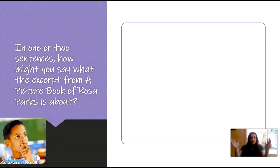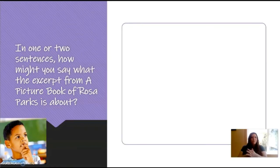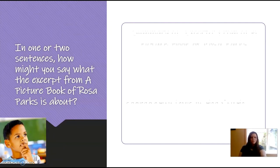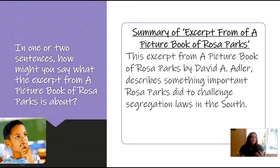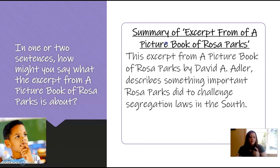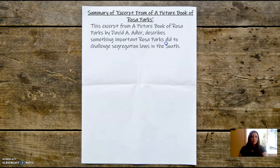So thinking about the excerpt of Rosa Parks — what was it mostly about? Take a moment to think about it. In my opinion, it was mostly about something important Rosa Parks did to challenge segregation laws in the South. I'm going to write that on our sheet: 'Summary of Excerpt from a Picture Book of Rosa Parks' by David A. Adler, and what it's mostly about. So the opening sentence is: 'This excerpt from a Picture Book of Rosa Parks by David A. Adler describes something important Rosa Parks did to challenge segregation laws in the South.' We're going to keep coming back to this and adding to it. Pause if you need to catch up.